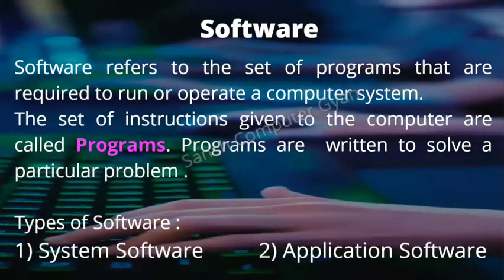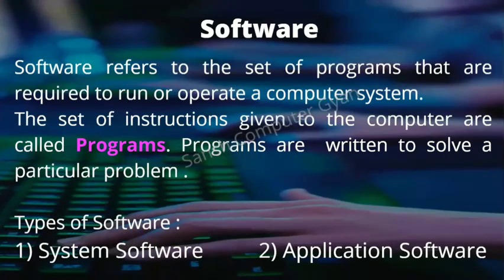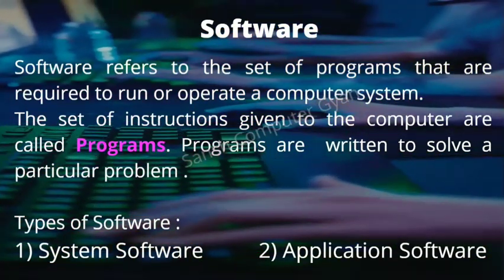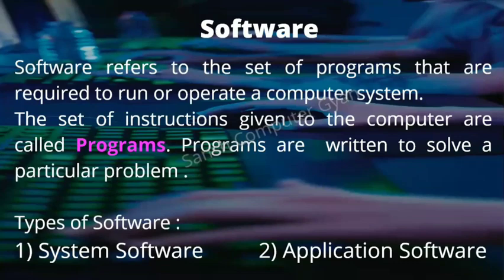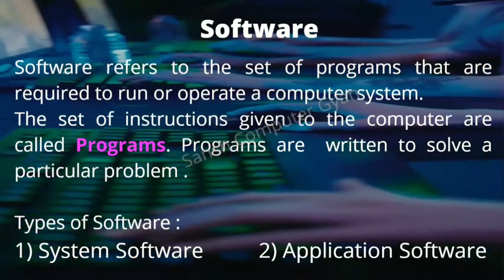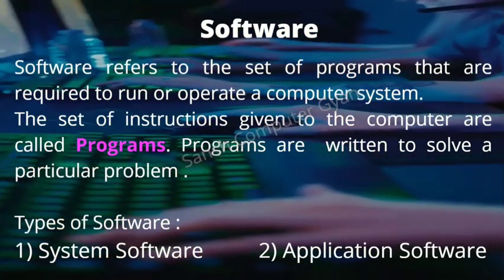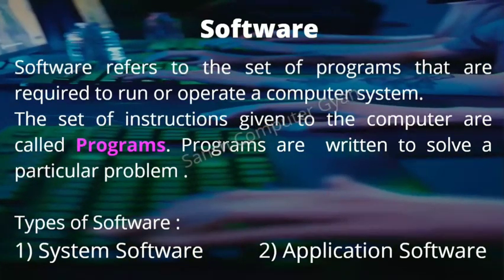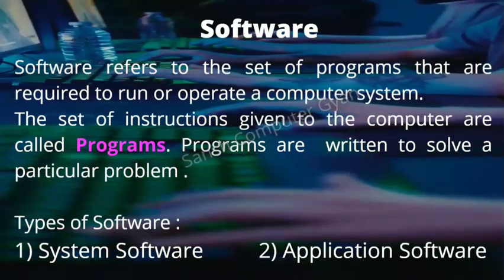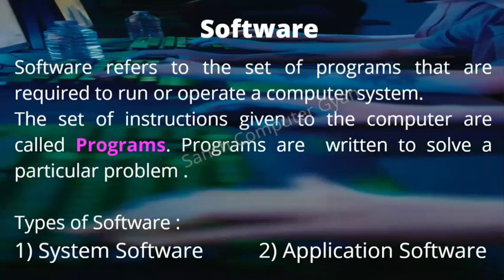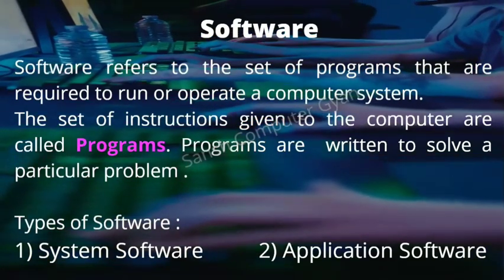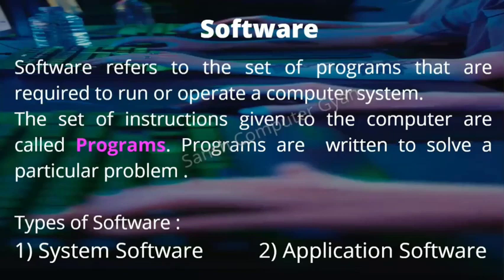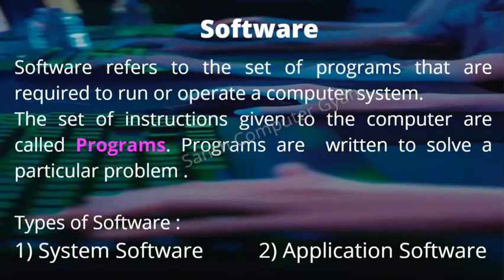What is software? Software refers to the set of programs that are required to run or operate a computer system. The set of instructions given to the computer are called programs. Programs are written to solve a particular problem. Software is a set of programs made to accomplish specific tasks.